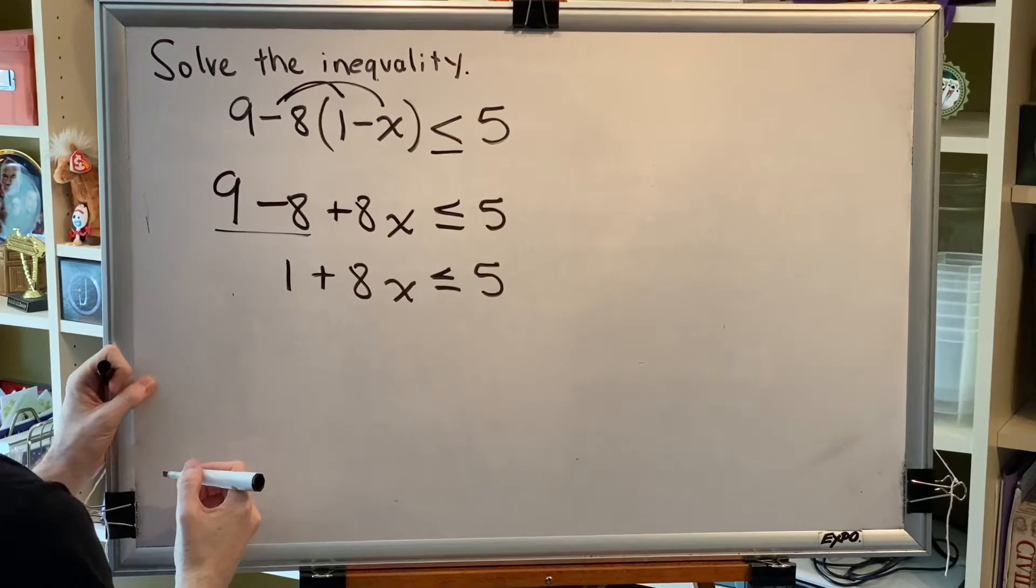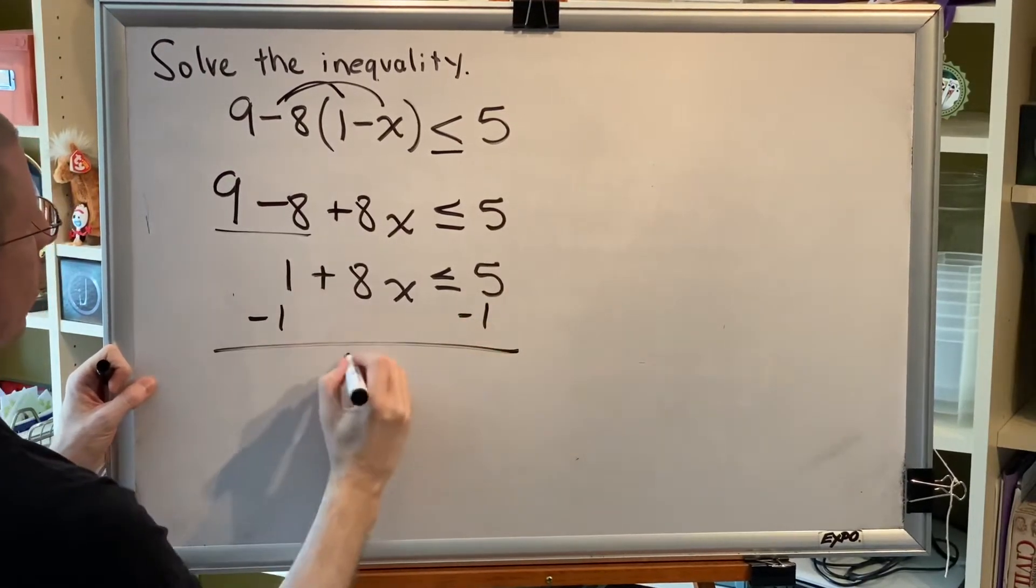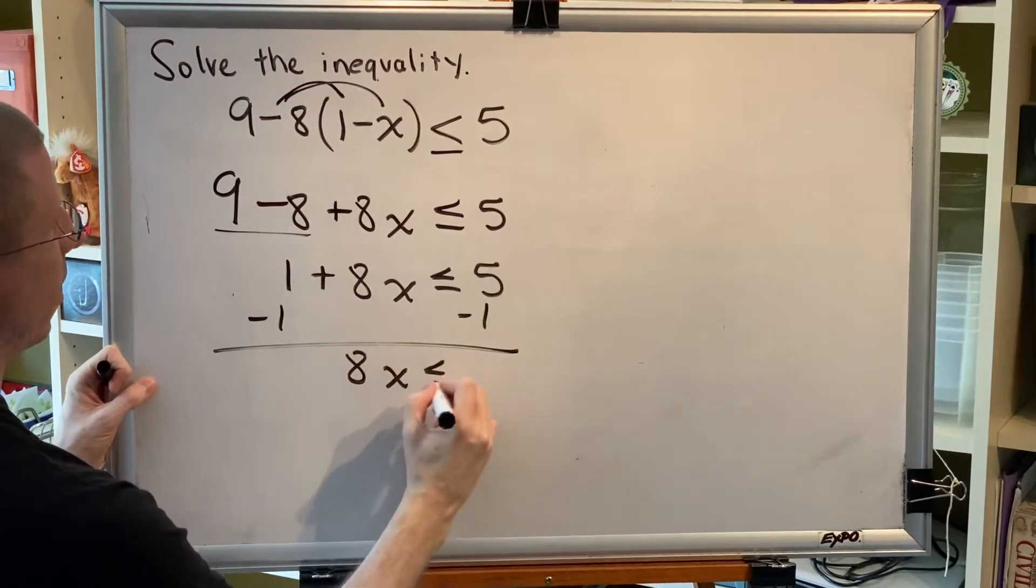Next, collect variable terms on one side and constant terms on the other. Subtract 1 here and here. 8x is less than or equal to 4.